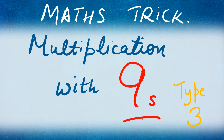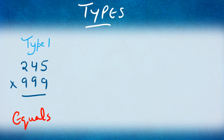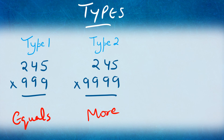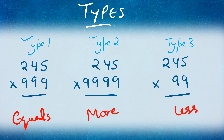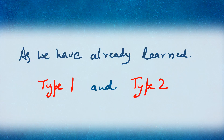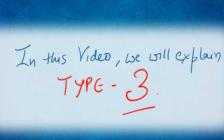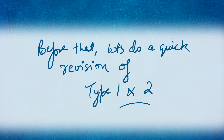The method's name is 'Multiplication with Nines,' and Type 3 is what we are going to learn today. We have told you earlier that there are three types in this method: Type 1, where the number of digits in the first number and the number of nines are equal; Type 2, where nines are more in the multiplier; and Type 3, where nines are less in the multiplier. As we've already learned Type 1 and Type 2, let's do a quick revision before moving to Type 3.